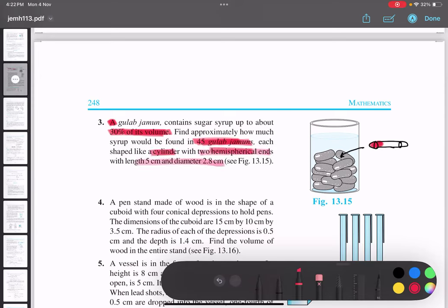They have given the information. Now 30% is consistent, 30% of this gulab jamun, 30% of this, 30% of this, 30% of this, yes or no? Yes.